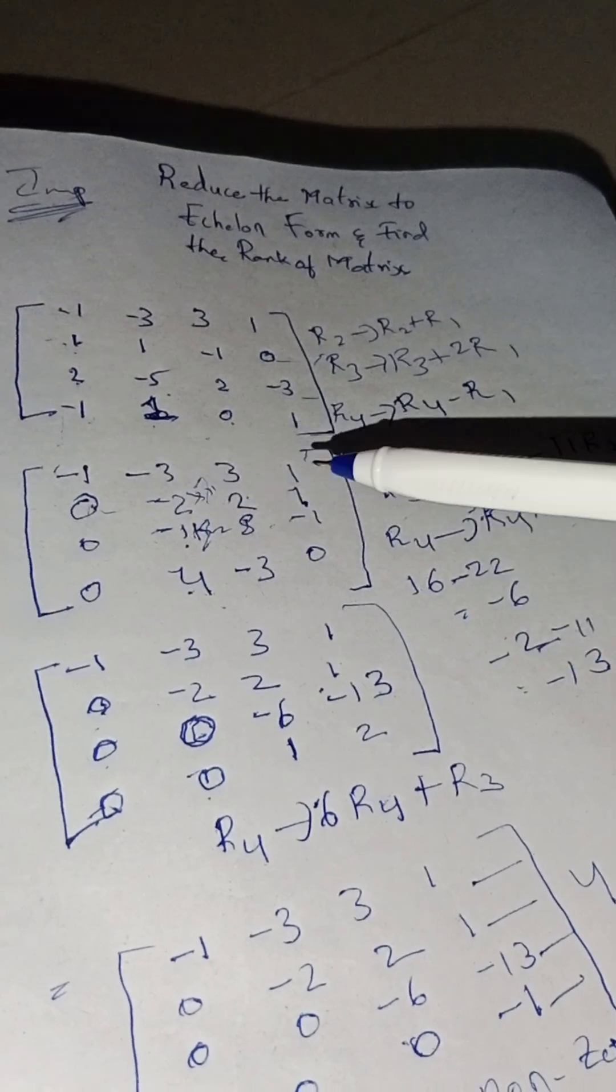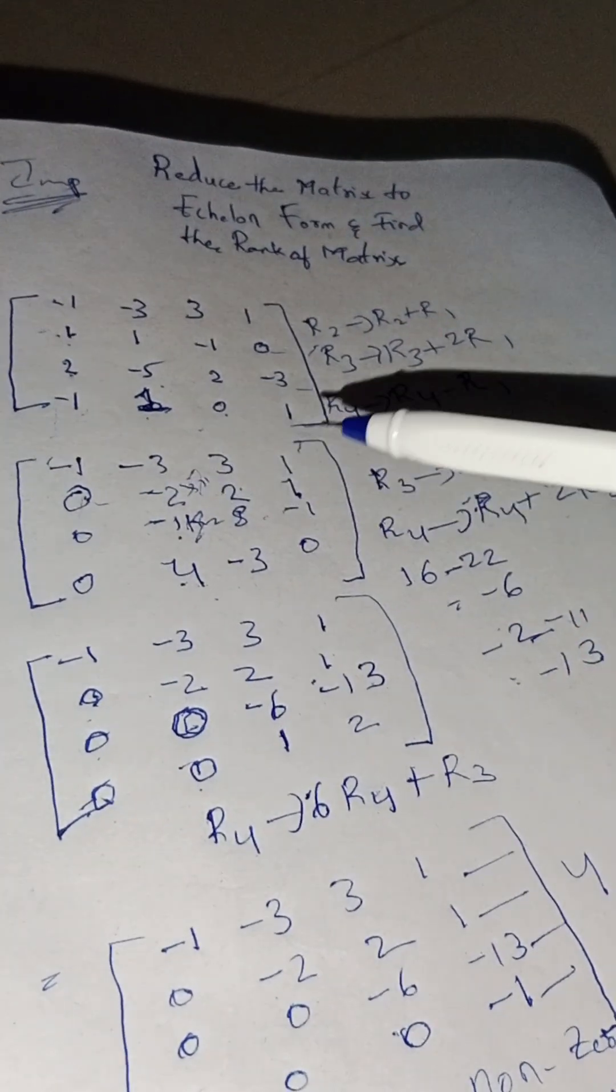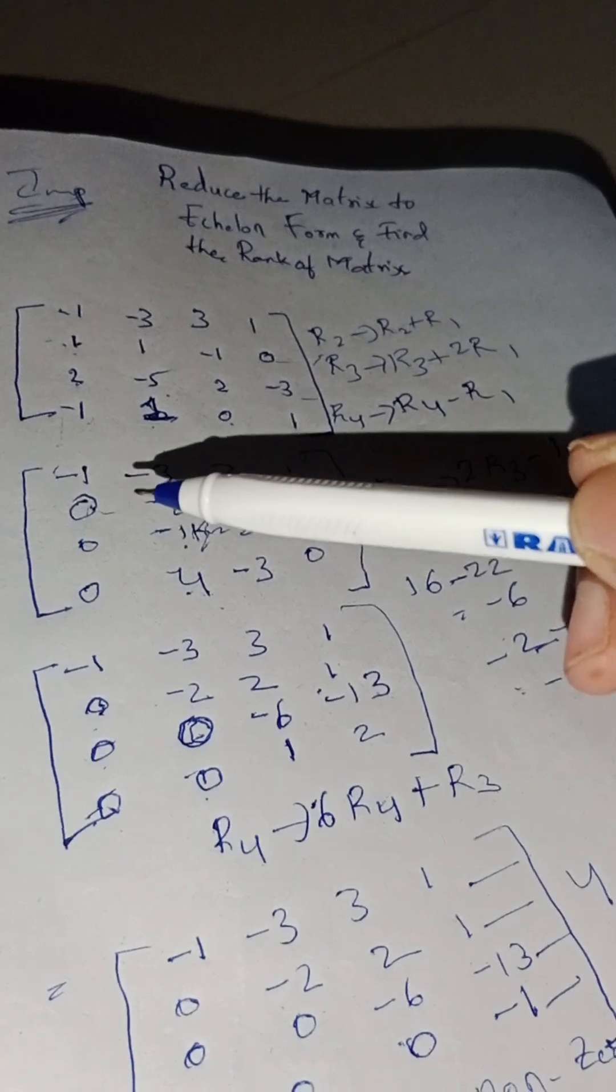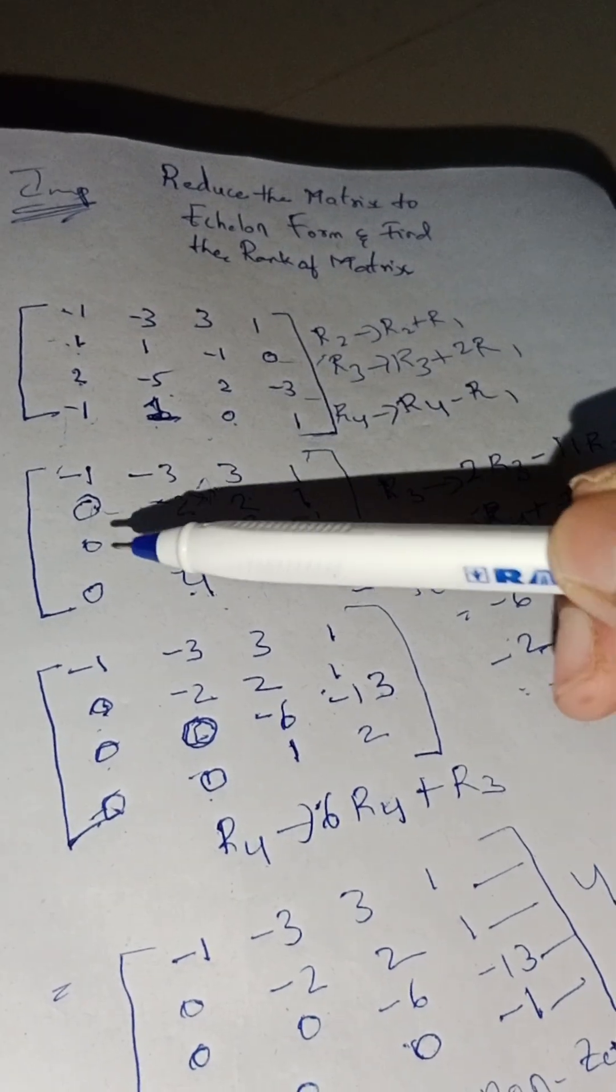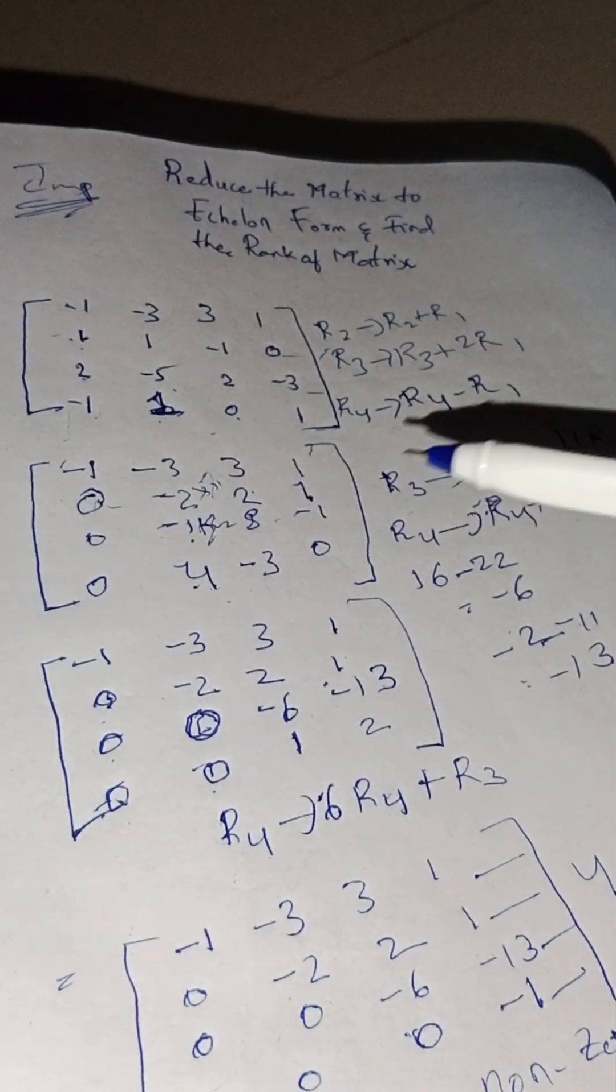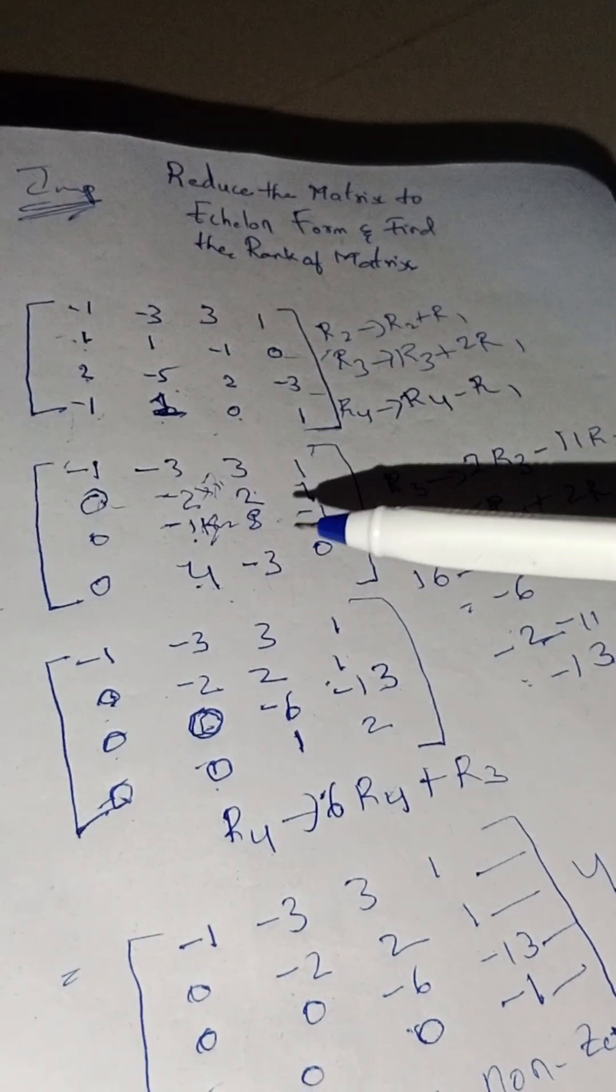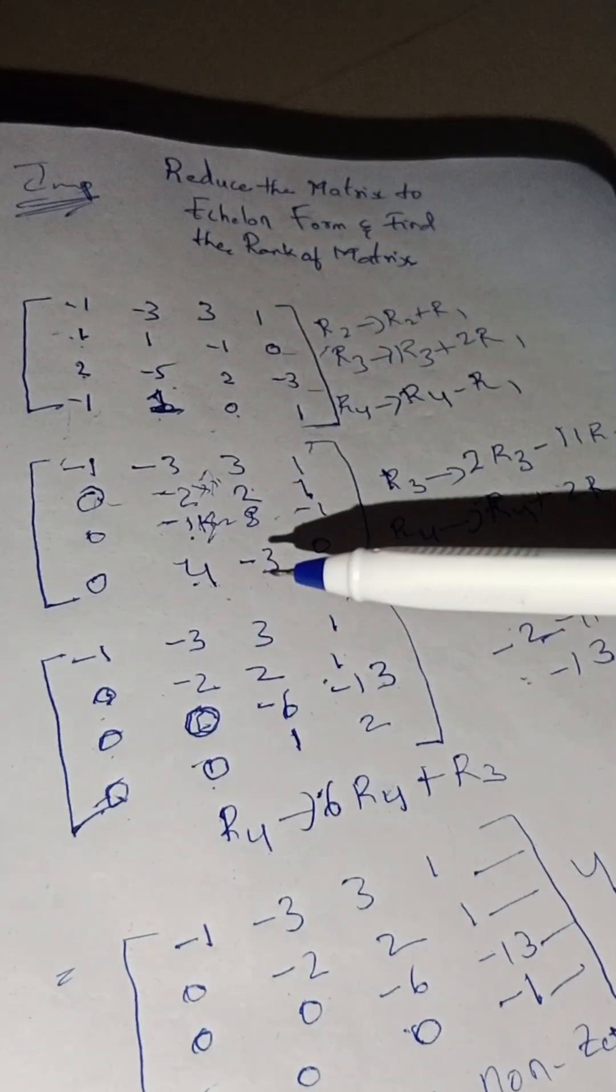My first row should be written as it is: minus 1, minus 3, 3, 1. After applying the transformation we will be getting 0, minus 2, 2, 1; 0, minus 11, 8, minus 1; 0, 4, minus 3, 0.